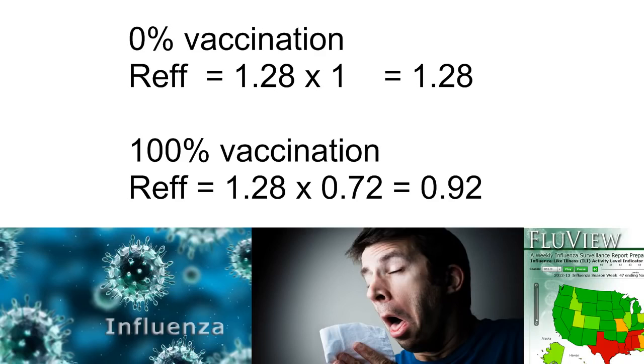At 100% vaccination with a 28% effective flu shot, the effective reproductive rate is flu's R sub-zero, 1.28, times 0.72, representing 72% susceptibles, which equals 0.92, or declining infection. Each person is infecting slightly less than one other person.